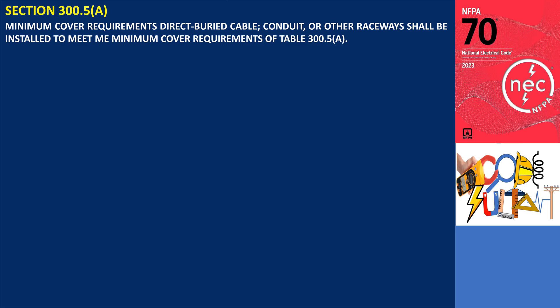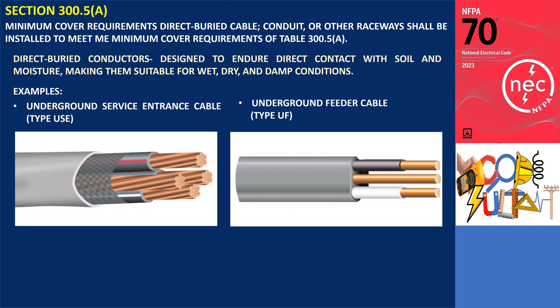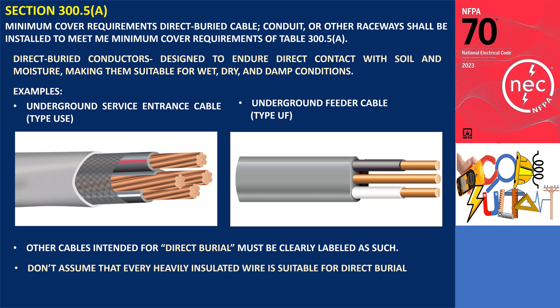Section 300.5(a) outlines the minimum cover requirements, stating that direct buried cables, conduits, or other raceways must adhere to the minimum cover depths specified in Table 300.5(a). Direct buried conductors are designed to endure direct contact with soil and moisture, making them suitable for wet, dry, and damp conditions. Examples of direct buried cables recognized by the code include Underground Service Entrance cable, type USE, and Underground Feeder cable, type UF. Cables intended for direct burial must be clearly labeled as such — it's important not to assume that every heavily insulated wire is suitable for direct burial.